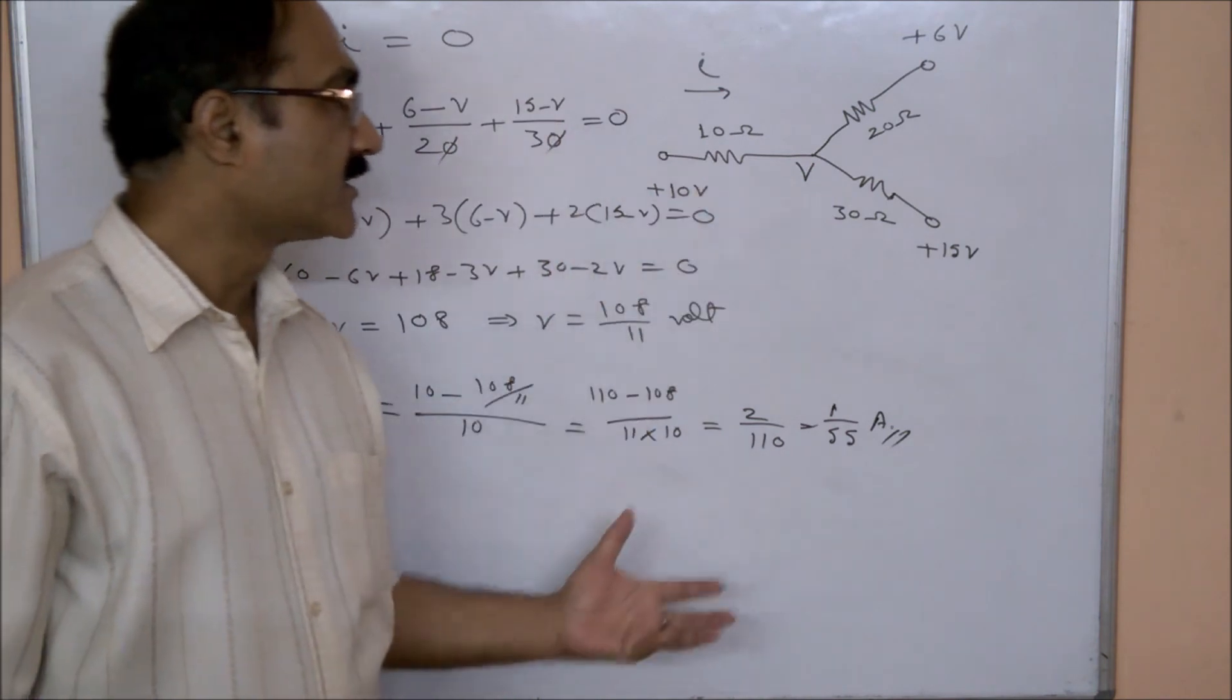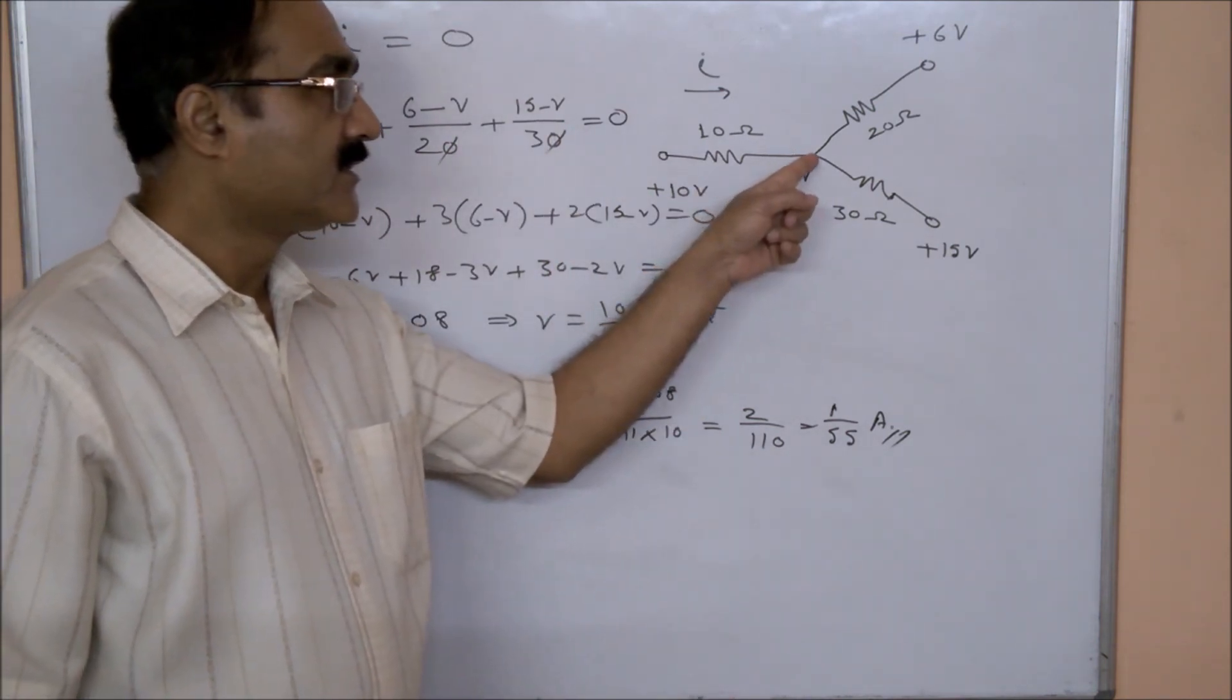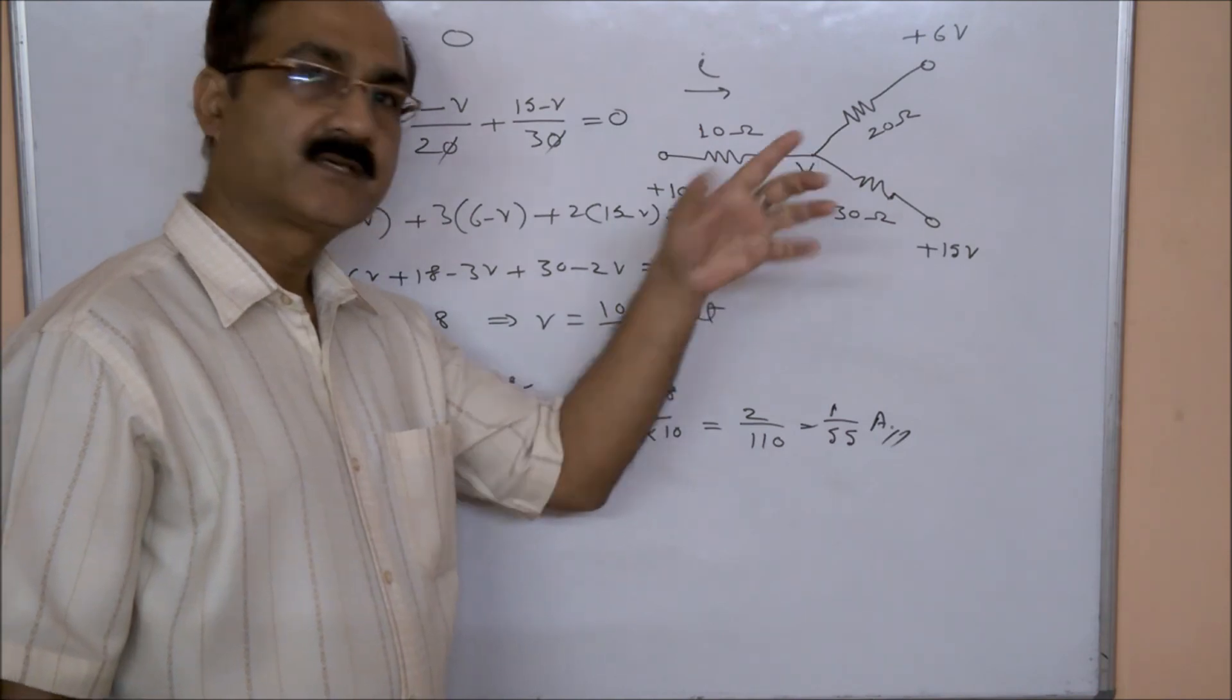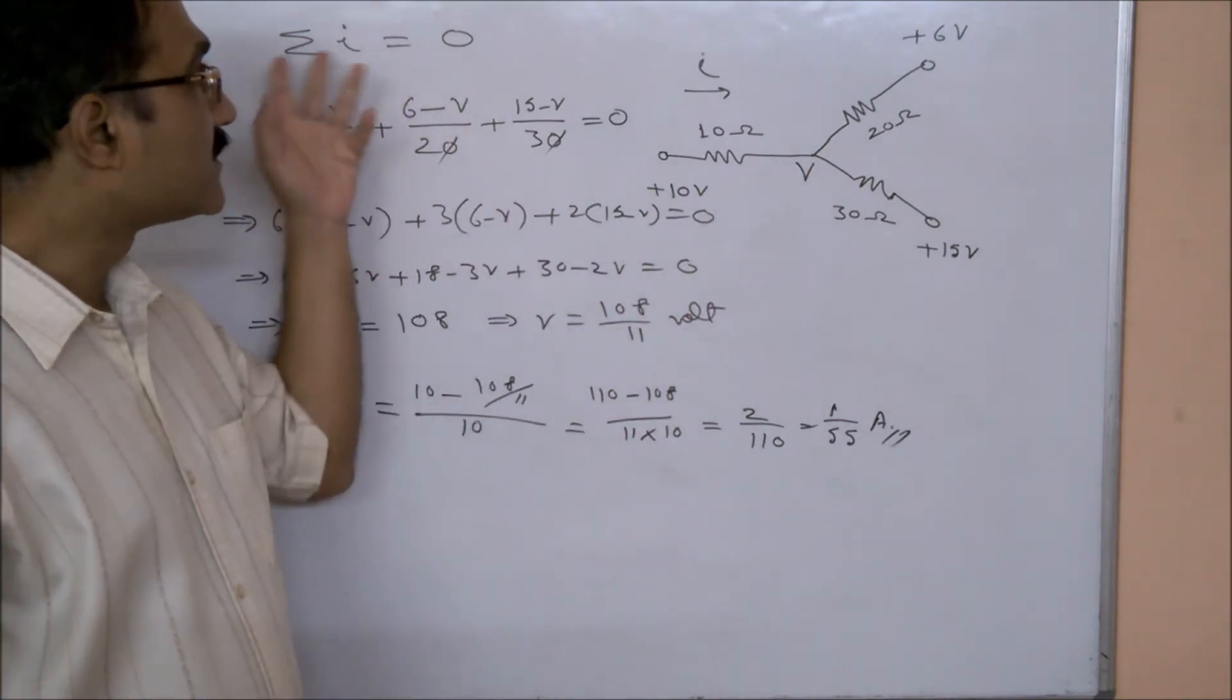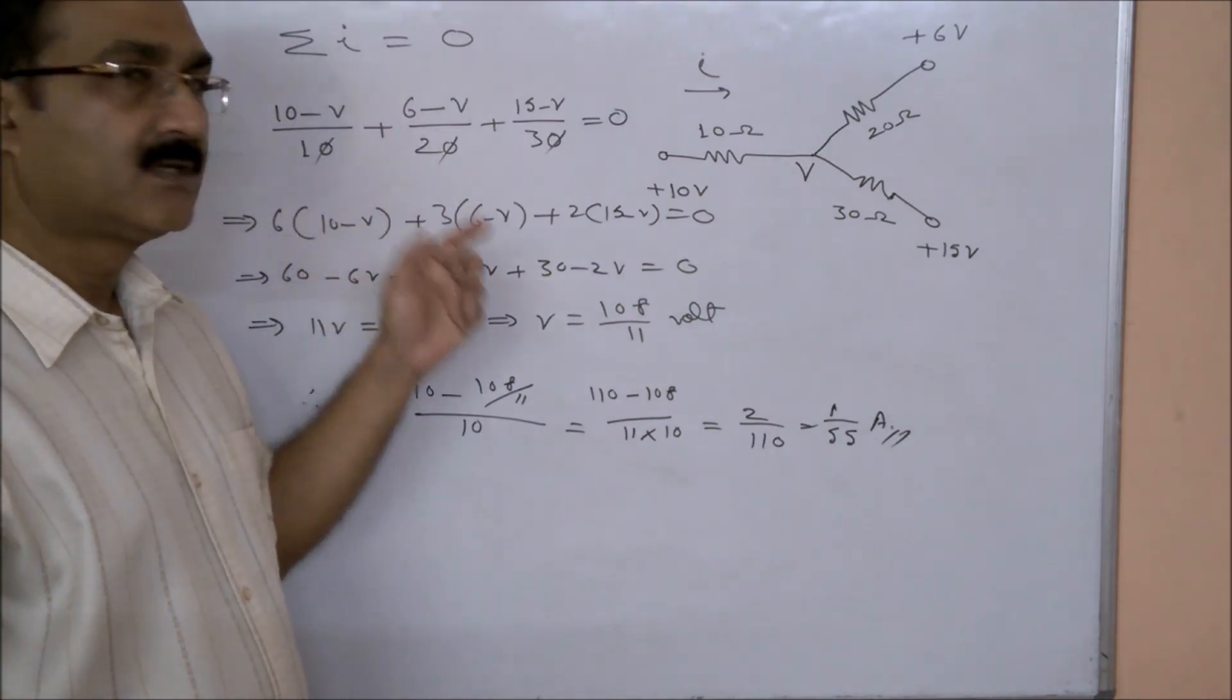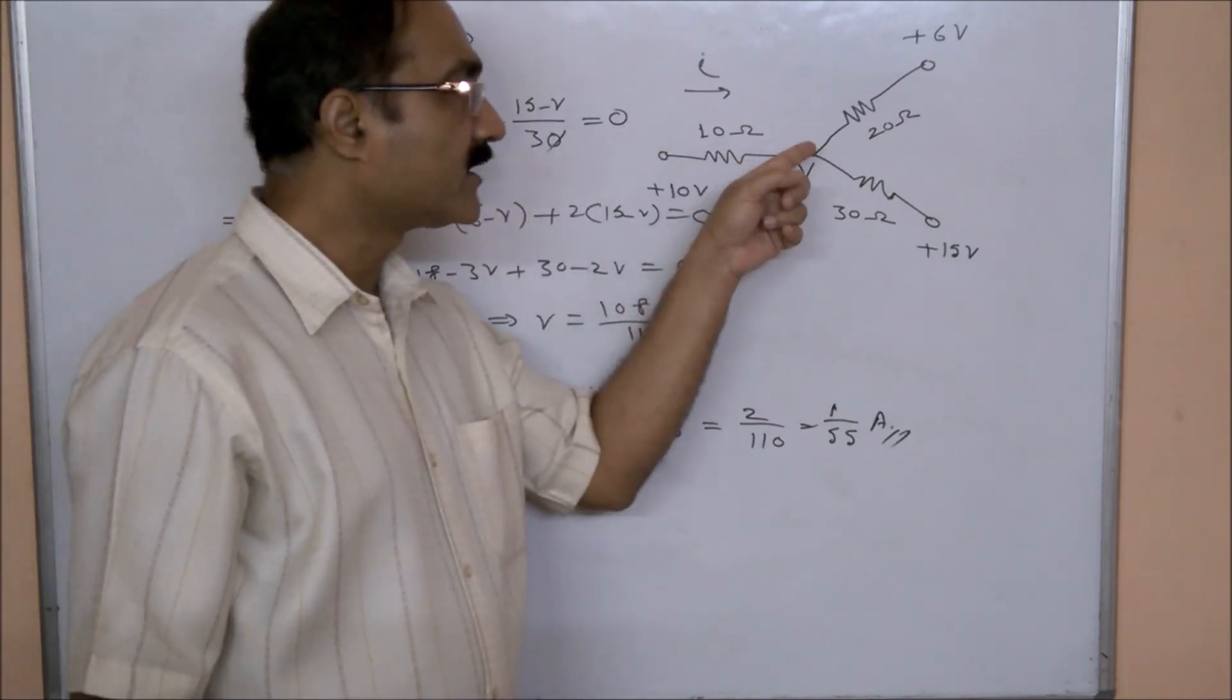1 by 55. So in equations like this, what we do is we first assume a potential here, say it's V, then we use Kirchhoff's first law.